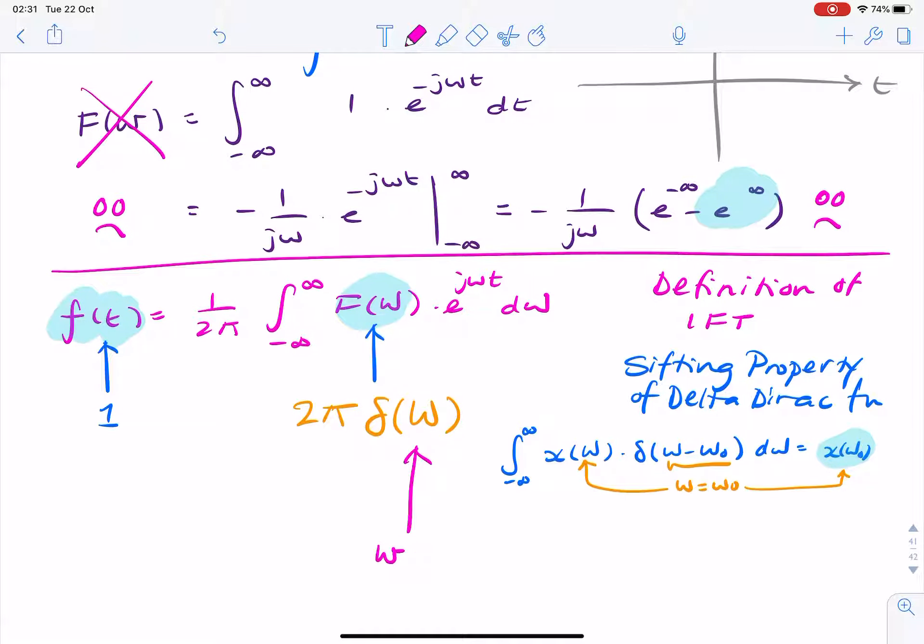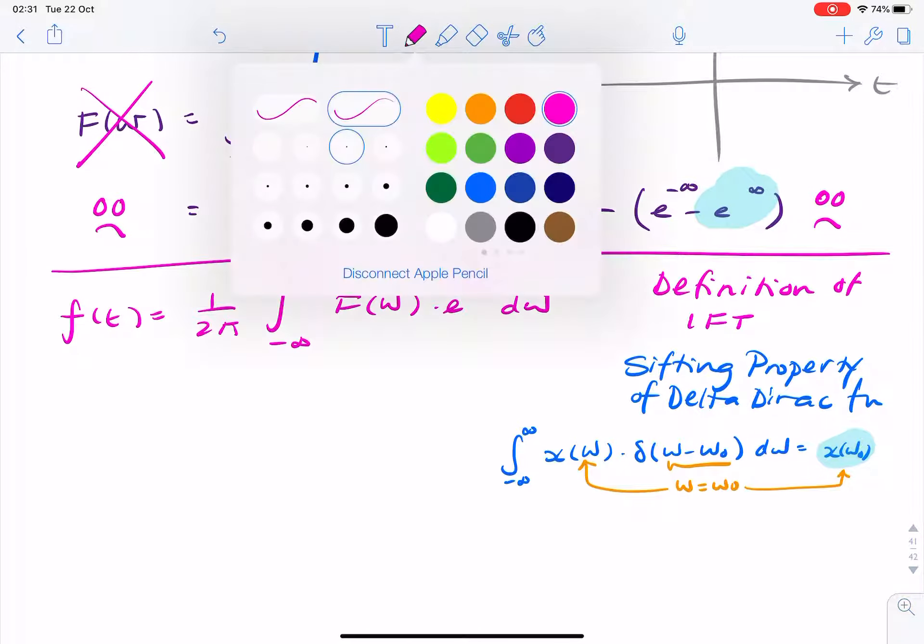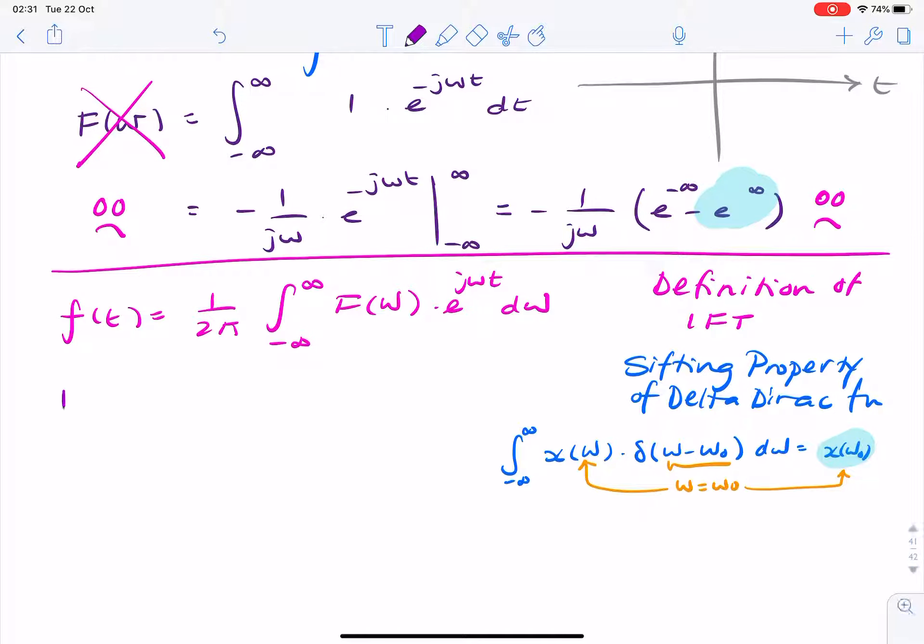So if I just tidy that up a little bit, I can now write it like this. I can say that 1 over 2 pi times the integral of 2 pi impulse at omega e to the j omega t d omega equals 1. And therefore, that is my f of t that I started with.